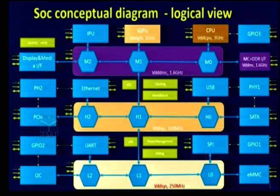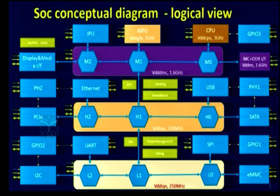Now we will be covering the SOC conceptual diagram. This is a logical view. You can see that on the top side we have various processing units, and we have various interconnecting blocks which are represented as M0, M1, M2, and H0, H1, H2, and the L0, L1, L2 blocks. These we are calling interconnect blocks because they are connecting various IPs.